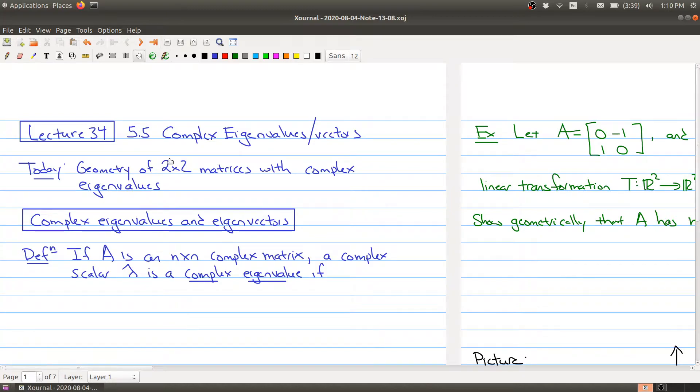Let me talk to you about complex eigenvalues and eigenvectors. First of all, here's our setup. We have an n by n matrix, complex matrix. So we're allowing some of the entries of the matrix to be complex numbers as well as real numbers. And what is a complex eigenvalue?